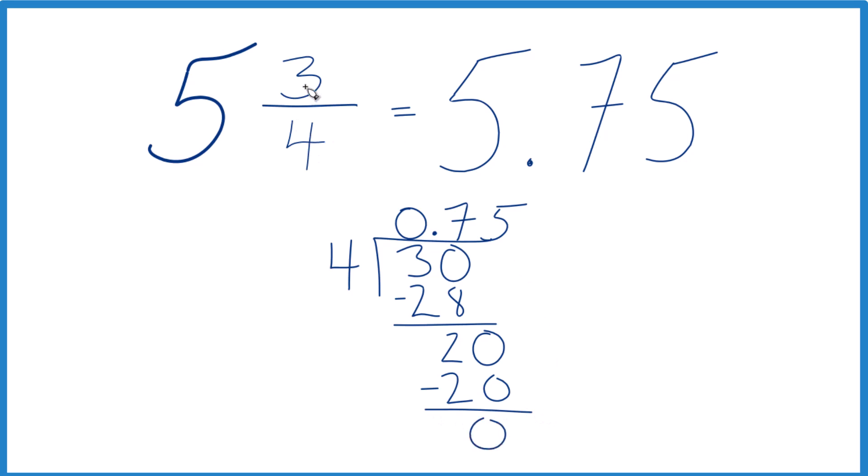So 3 fourths, the fraction, equals the decimal 0.75.